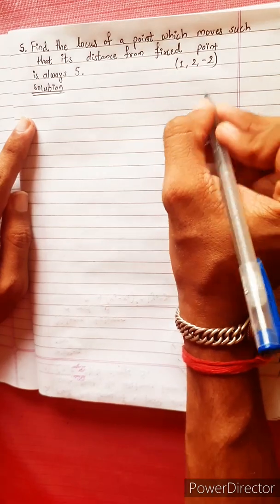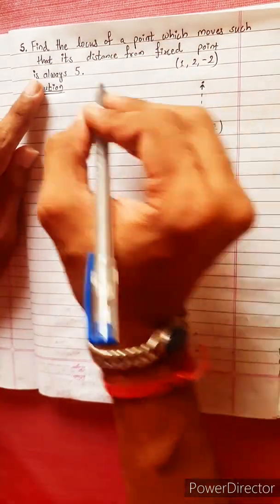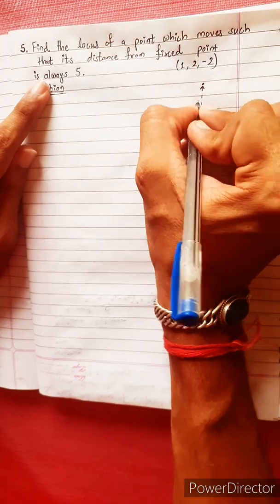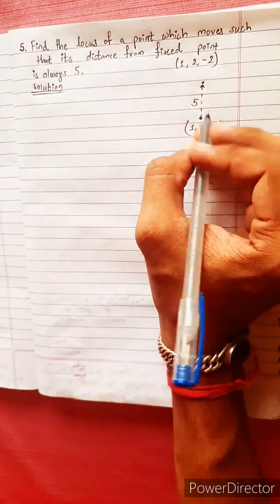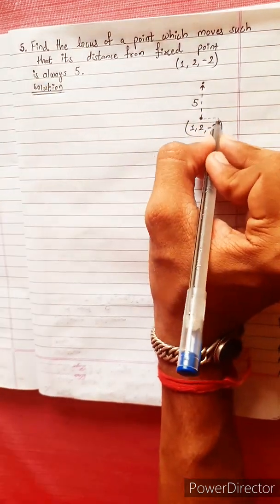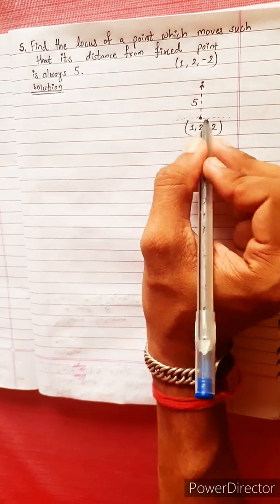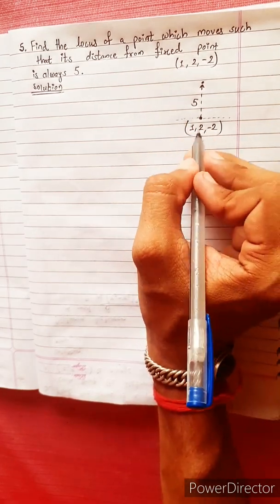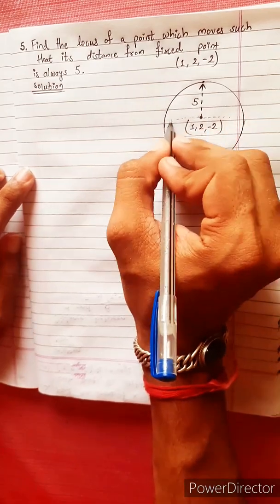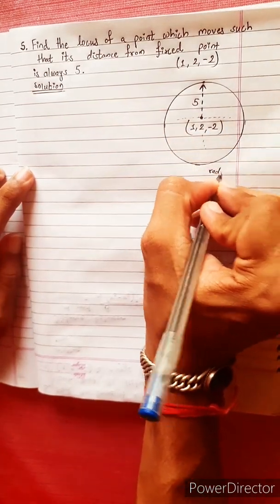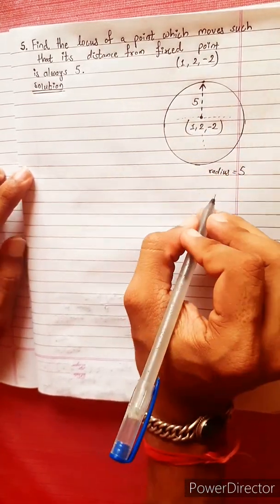If you look at this point, it will be another point. The distance from the fixed point is always 5 units. The distance is the same for all such points.